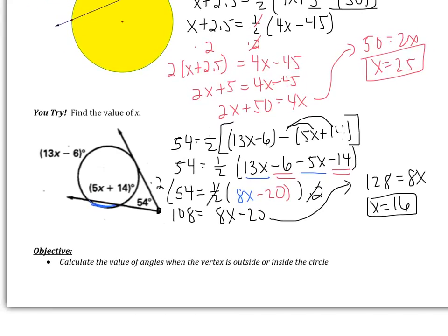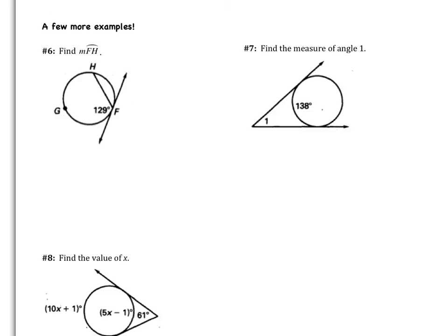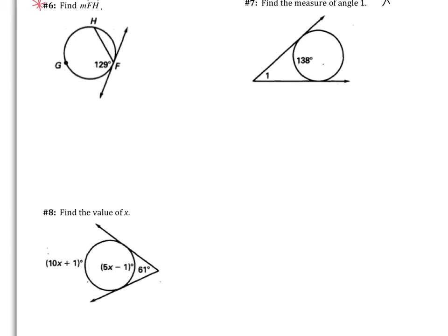That was our last required example. The objective was to calculate the value of angles when the vertex is outside or inside the circle. Please flip the page. For tomorrow, complete example 6 on your own. Right now I'm going to do examples 7 and 8 — you can keep watching or try them on your own first. The answer to number 7 is x equals 42, and the answer to problem 8 is x equals 24.